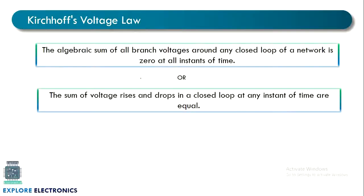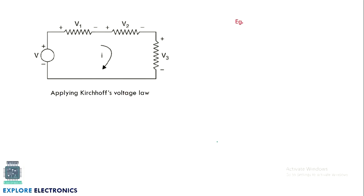Let us recall the Kirchhoff Voltage Law explained in the previous video. KVL states that the algebraic sum of all branch voltages around any closed loop of a network is zero, or the sum of voltage rises and voltage drops in a closed loop at any instant of time are equal. The expression is: summation V (EMF or voltage) minus summation IR (drops in the components) equals zero. Let us see how we apply KVL.